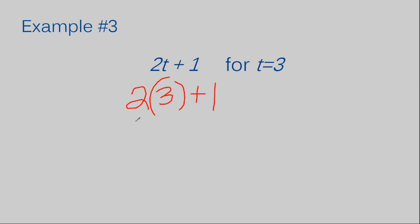OK, now I need to remember my order of operations. And if you remember, in order of operations, you're going to multiply before you add. So I'm going to multiply my two and my three first, I get six, and then I'm going to add this one and now I have seven. So the answer to example number three is seven.